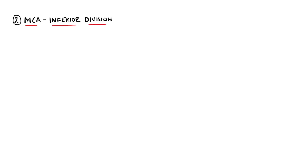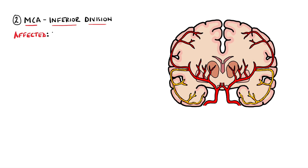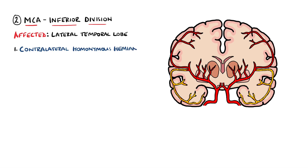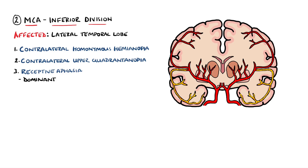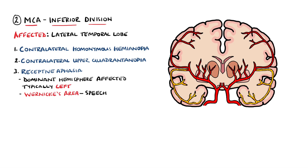Next we have the middle cerebral artery inferior division syndrome. The inferior division supplies the lateral temporal lobe, and the deficits seen here are typically a contralateral homonymous hemianopia due to involvement of the optic radiations. It is also possible to see an upper quadrantanopia. Similarly to the superior division, different deficits are seen if the dominant hemisphere is involved — in this instance, Wernicke's area is on the dominant side and is responsible for comprehension of speech, so a receptive aphasia may be seen.